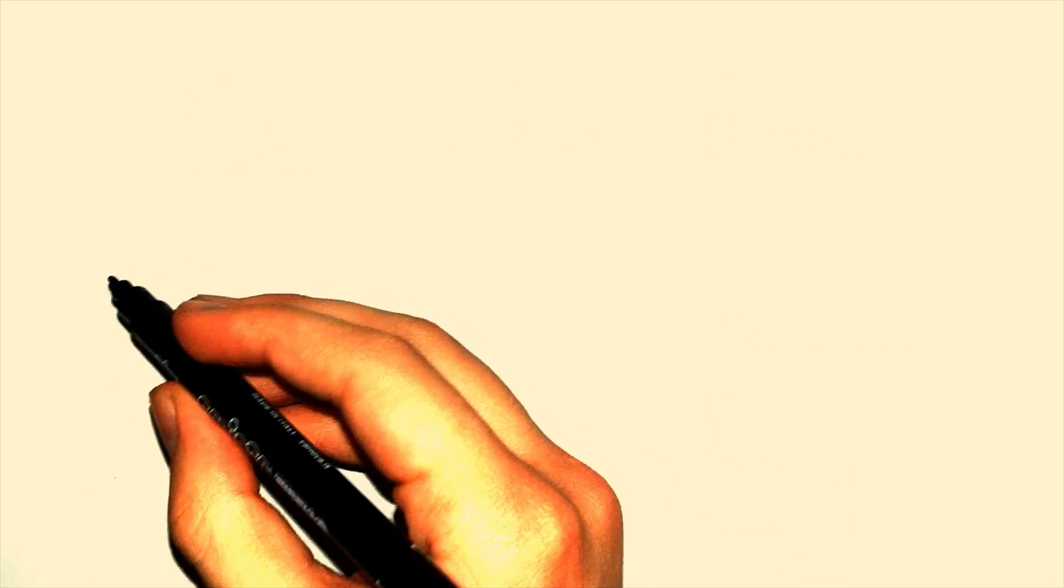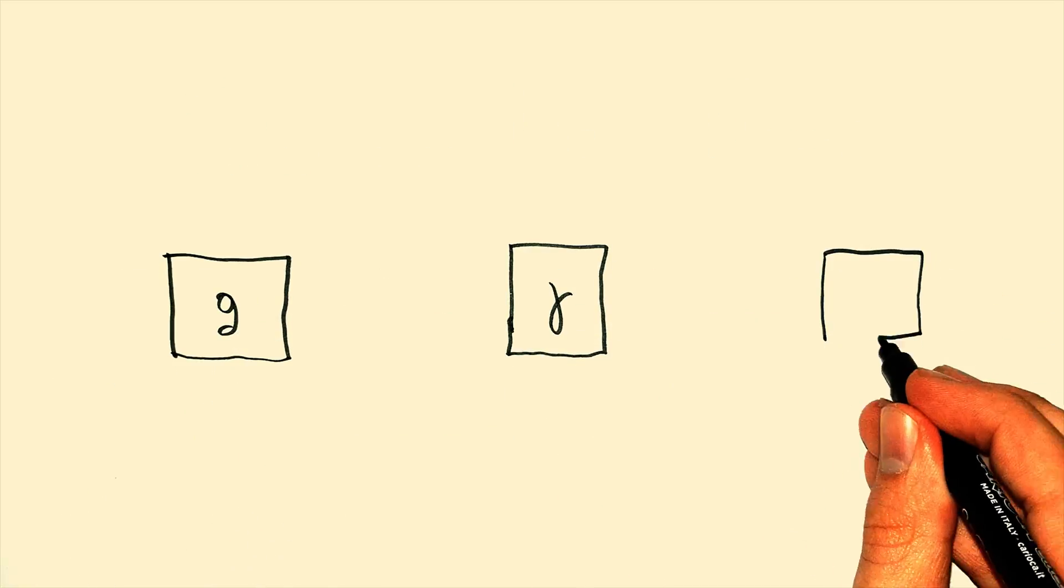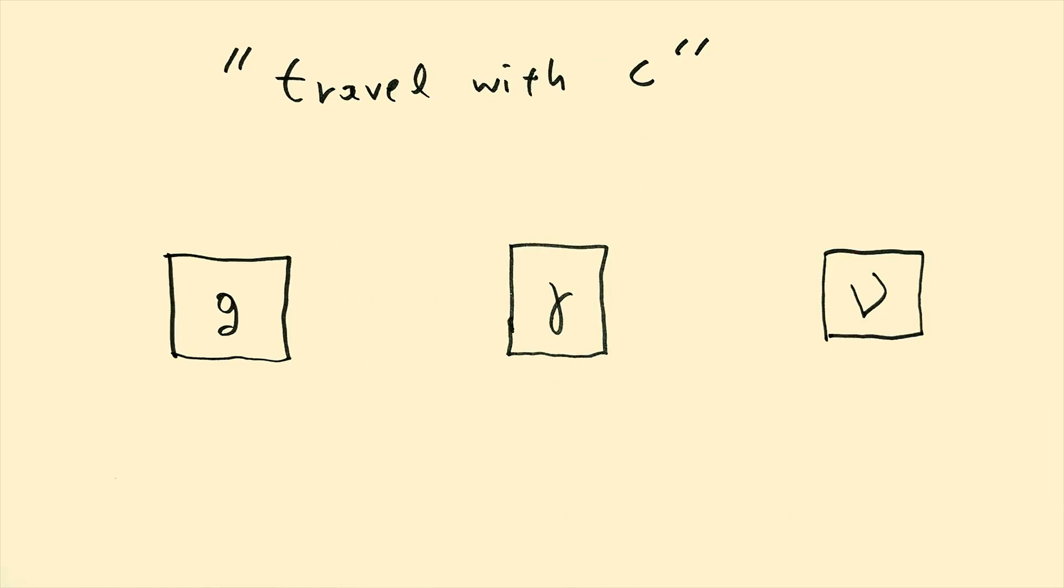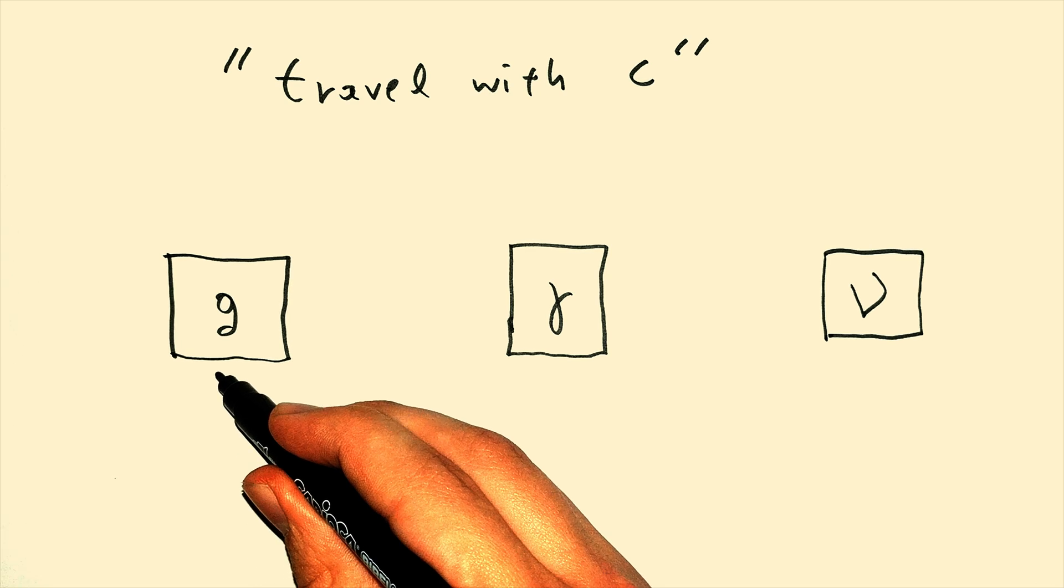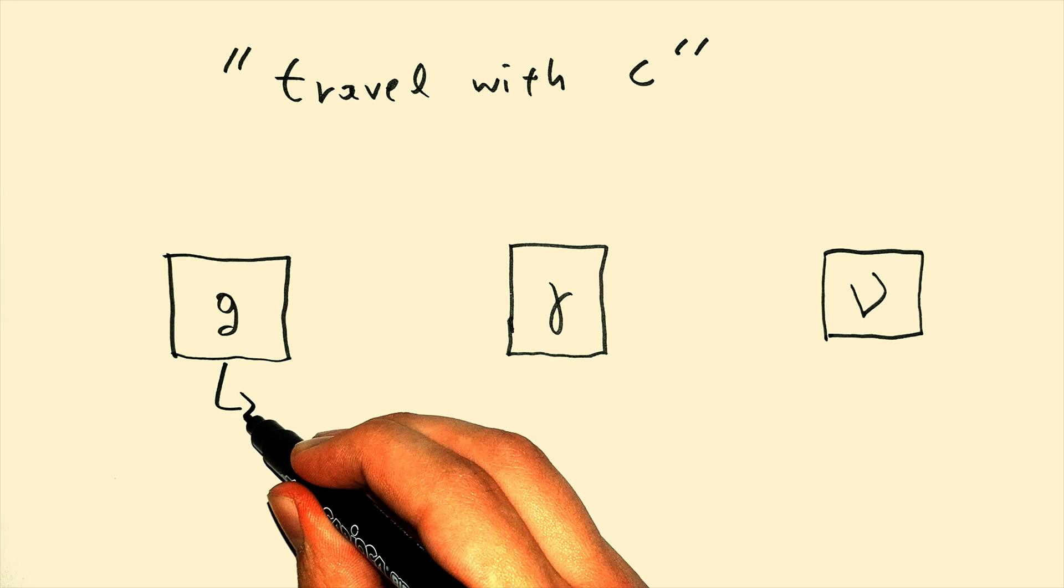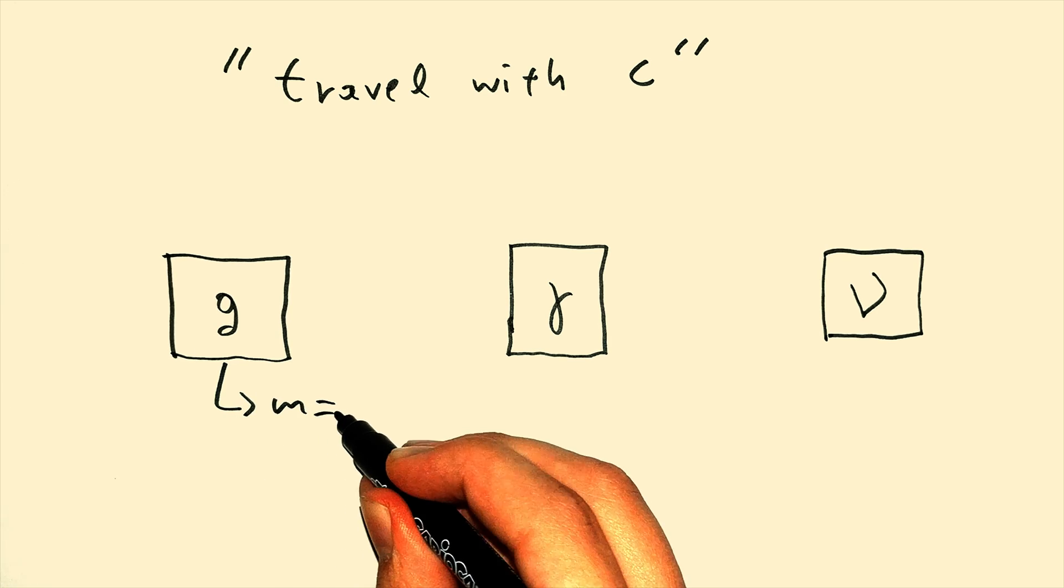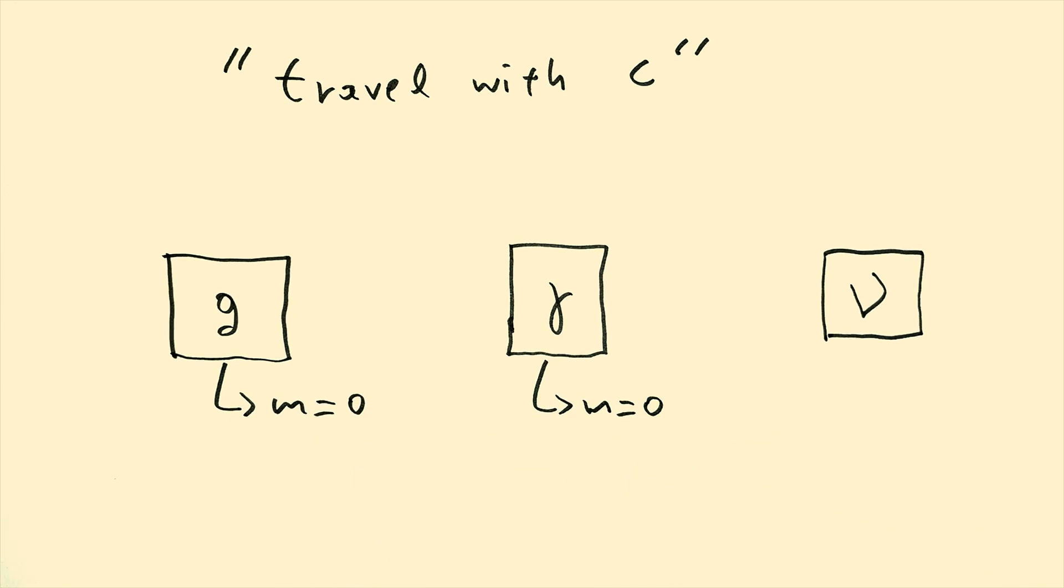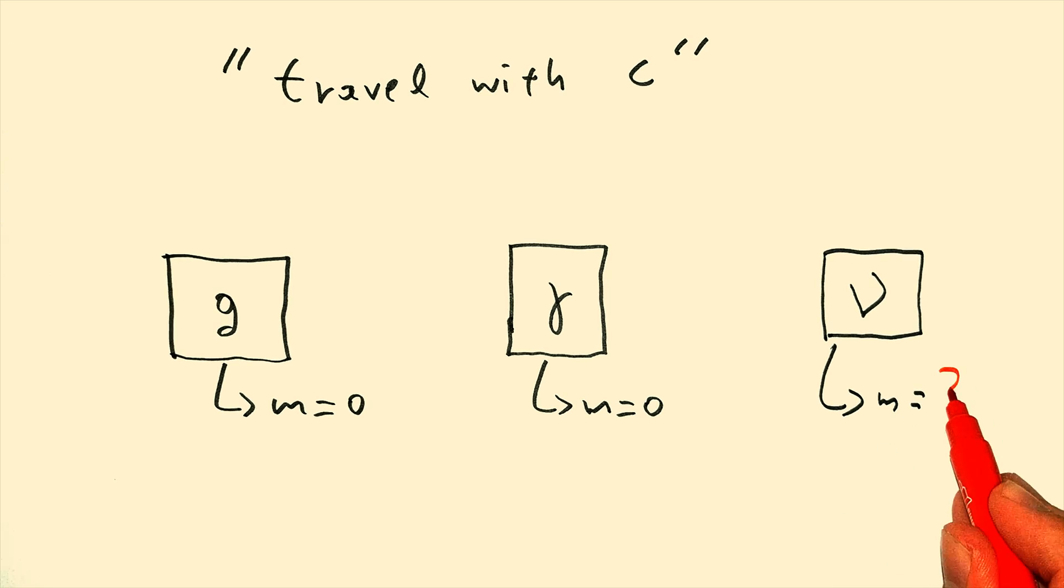Number 2. In fact, all particles which don't have mass travel with C. And the primary, fundamental reason why they travel with C is the fact that they are massless. So gravitons are massless, photons are massless, neutrinons may or may not be massless, we still don't know.